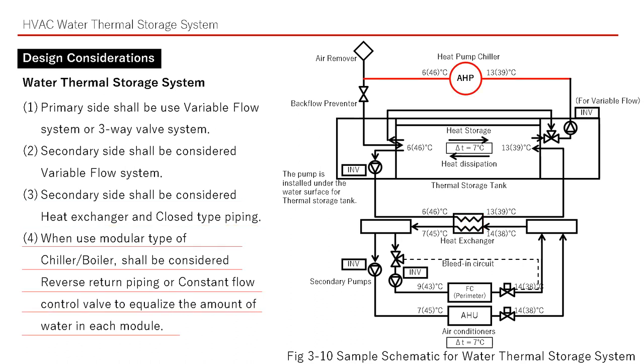When using a modular type of chiller or boiler, shall be considered reverse return piping or constant flow control valve to equalize the amount of water in each module.